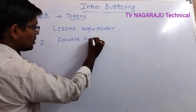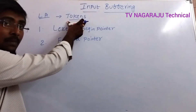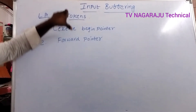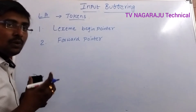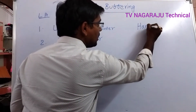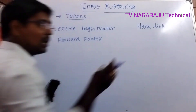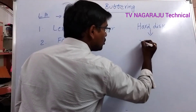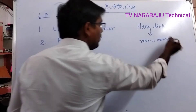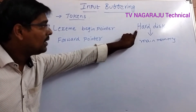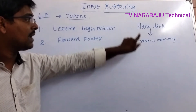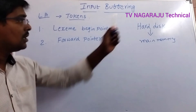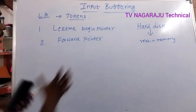The lexical analyzer uses two types of pointers — the begin pointer and the forward pointer — to read a token. Our source program is initially stored on the hard disk. Whenever the program needs to be executed, it must be loaded into main memory. Reading character by character means that for each character — for example, if the program contains 10 characters — 10 system calls are required.